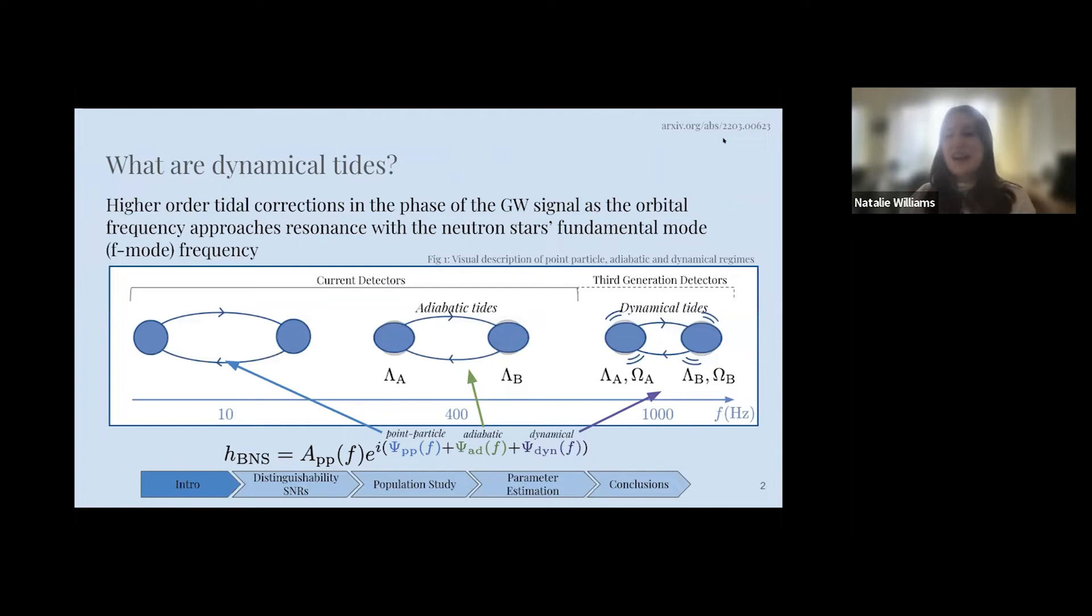What are dynamical tides? Neutron stars are extended bodies, unlike black holes, so they produce tidal forces, just like the moon on the earth. In terms of gravitational waves, this corresponds to an induced quadrupole moment on each companion, and this causes energy dissipation and faster merging of the system than it would be with a binary black hole system.